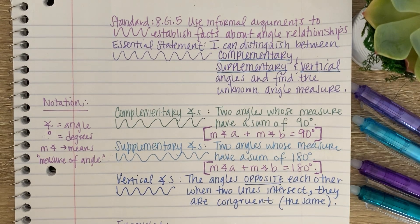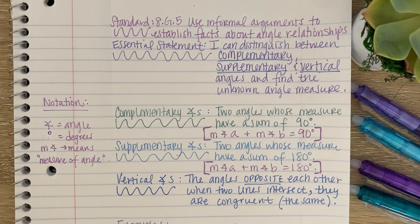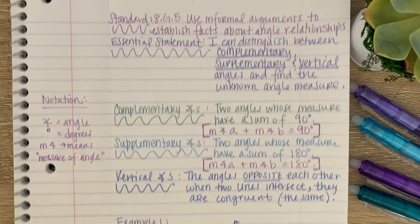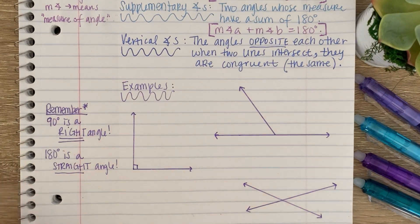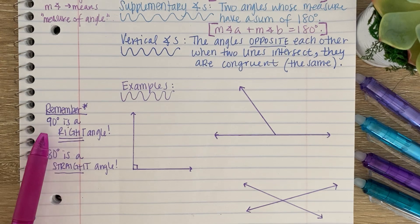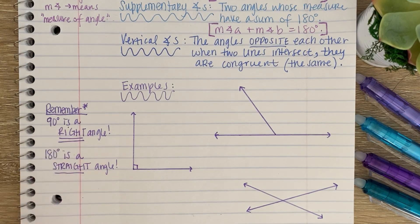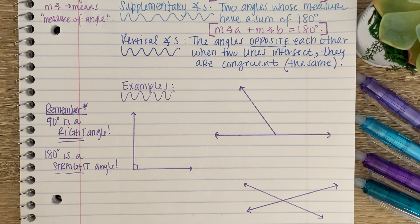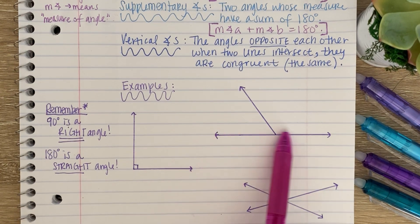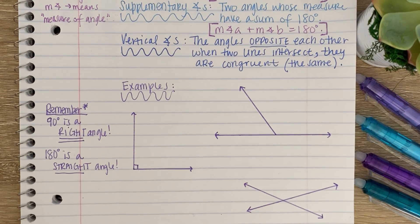So before we do a couple of examples, I want you to remember some things about angles. Remember, 90 degrees is a right angle. A right angle is denoted with this little box right here. That means it is 90 degrees. And 180 degrees is a straight angle. It is a straight line going like this.